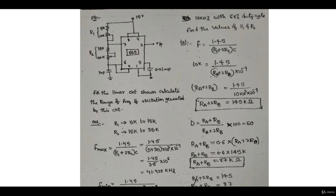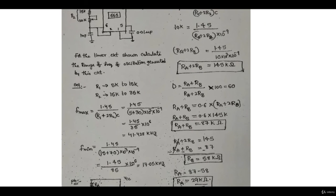Clearly, R1 can vary between 5 kilohms and 15 kilohms - when the variable part is set to 0 it is 5 kilohms, and when set to 10 kilohms it becomes 15 kilohms. Similarly, R2 varies from 15 to 35 kilohms. Using the frequency formula f = 1.45 / [(R1 + 2R2)·C], plugging in the minimum resistance values (R1 = 5k, R2 = 15k) with C = 1 nanofarad gives the maximum frequency of 41.425 kilohertz. Using the maximum values (R1 = 15k, R2 = 35k) gives the minimum frequency of 17.05 kilohertz.